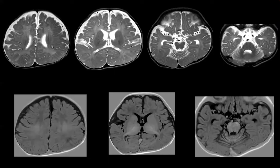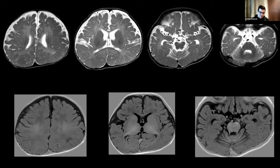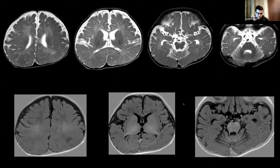Panel asks about the excretory pattern of ketones suggestive of mitochondrial disorder. The values are in normal range with no ketonuria, but they mentioned the excretory pattern is suggestive of mitochondriopathy. A geneticist will be consulted. From an imaging perspective, the delayed or hypomyelinating pattern with cerebral atrophy and small-appearing thalami also raises lysosomal storage disorders as a differential.